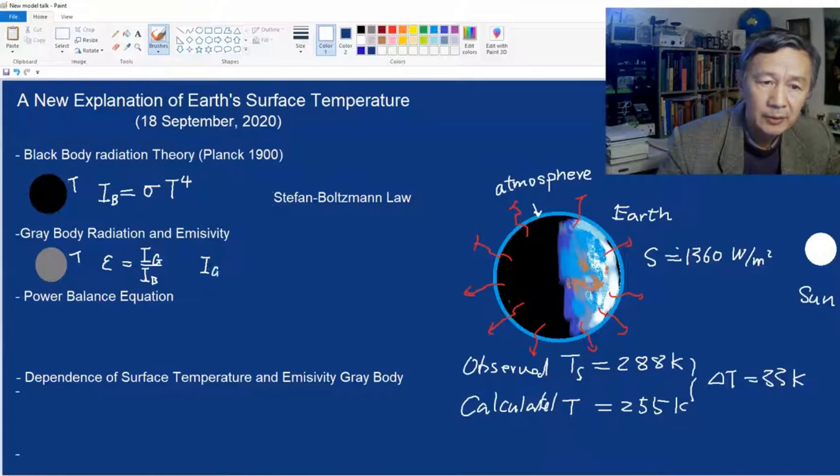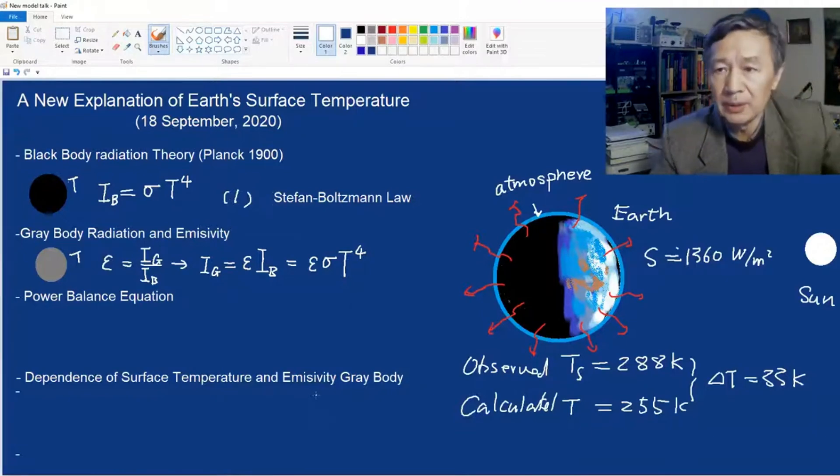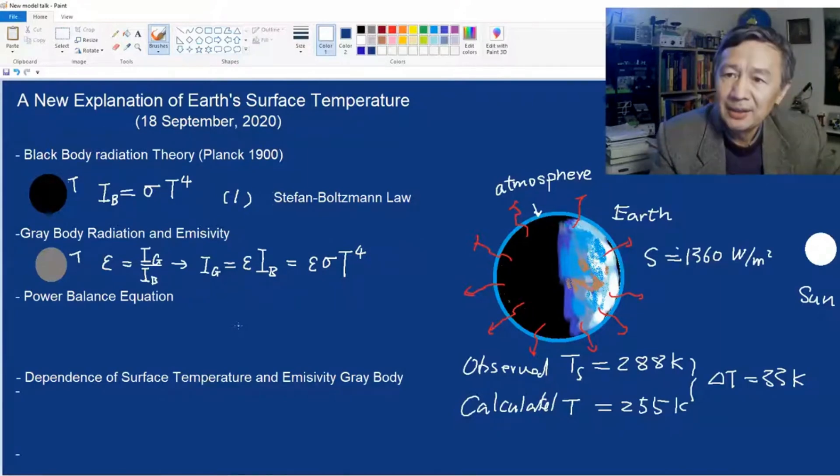In this way, we can still apply Stefan-Boltzmann law to describe the relation between the radiation intensity and the body temperature of the gray body. So the intensity of gray body can be written as epsilon sigma times the temperature to the power of 4. Here we have used equation 1, the Stefan-Boltzmann law. Although some researchers have noticed this before, it would appear they didn't go further to fix another problem, which I just discovered recently.